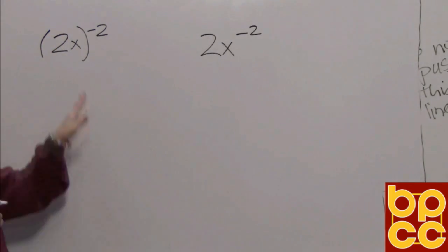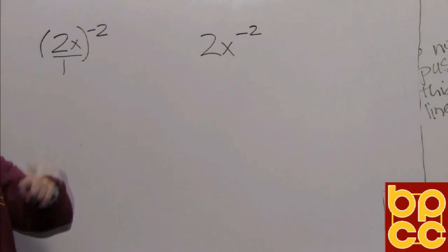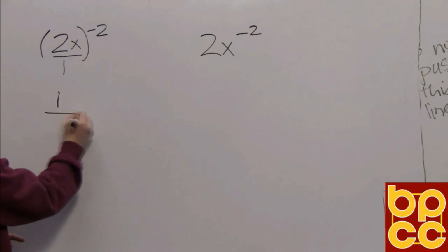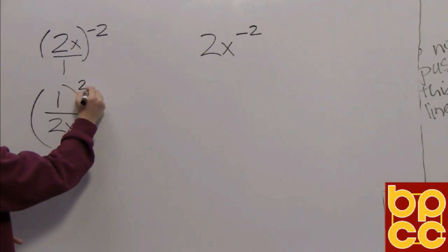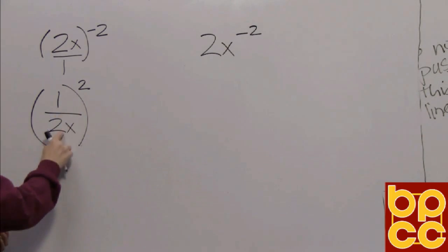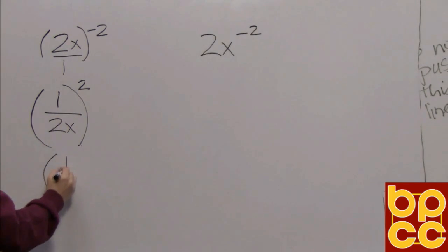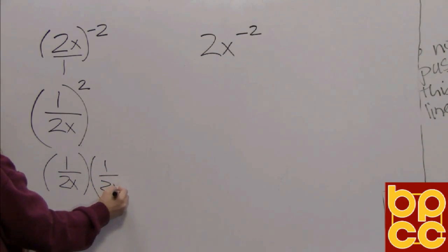So we're going to flip all of this. To make all this a fraction we put it over 1. So now we'll do our reciprocal. That'll become 1 over 2x. And now the exponent's squared. What does squaring mean? It means to take this and multiply it twice. So we can write 1 over 2x times 1 over 2x.